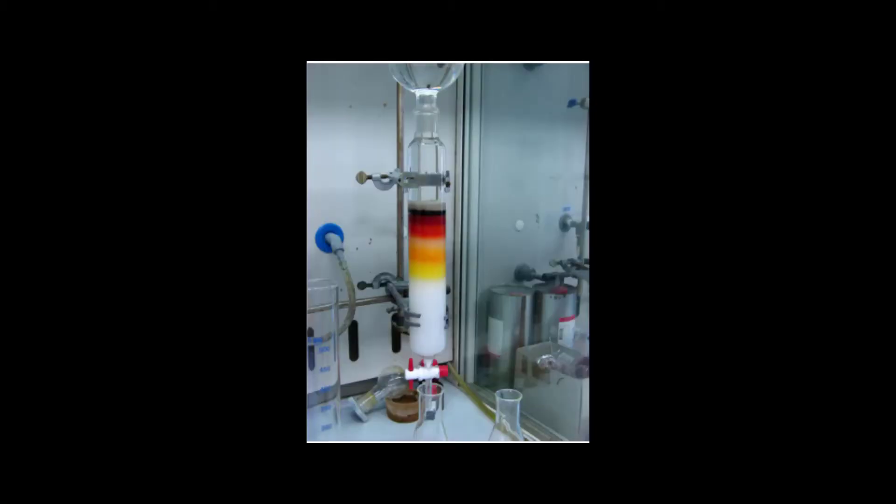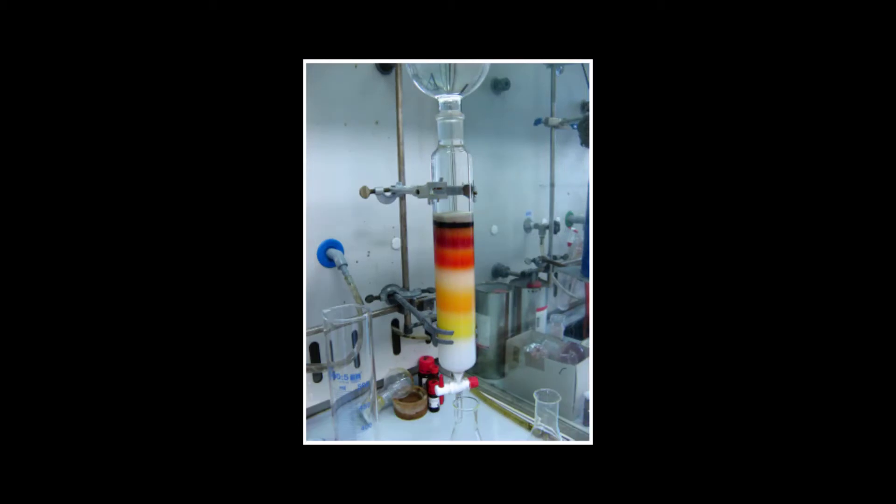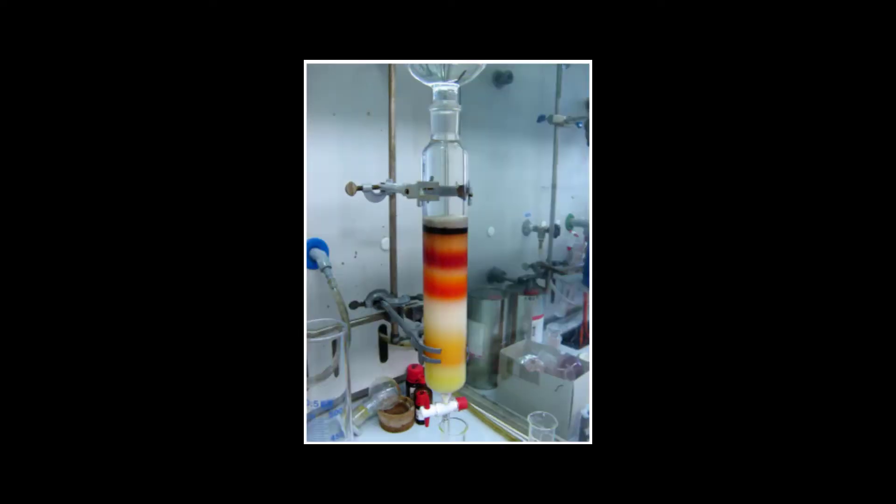In column chromatography, a glass tube is packed with a substance like silica. A mixture is placed at the top and a solvent is poured in. As the solvent moves slowly through the tube, it carries the different parts of the substance at different rates, causing the mixture to separate.